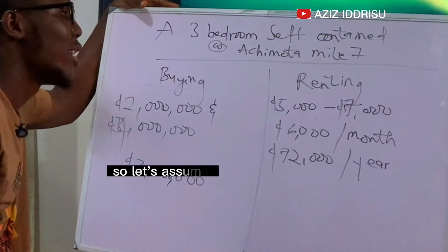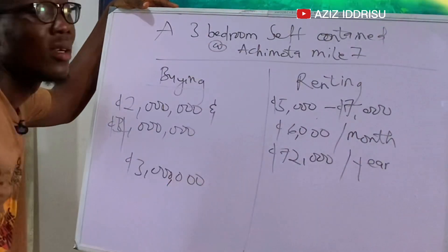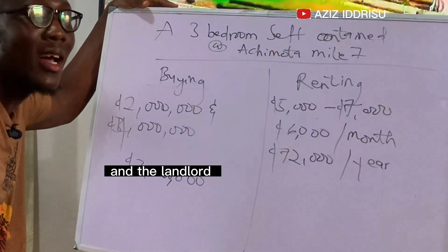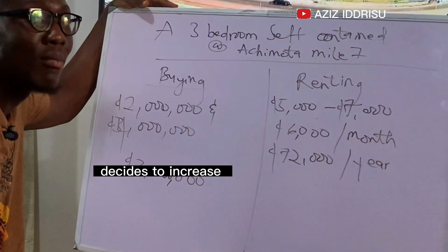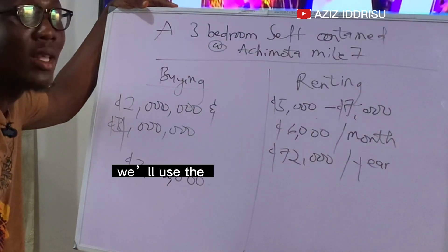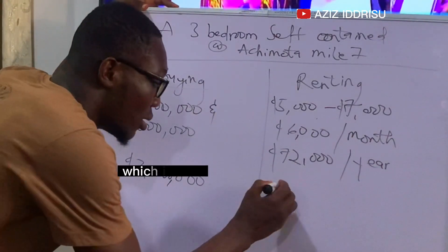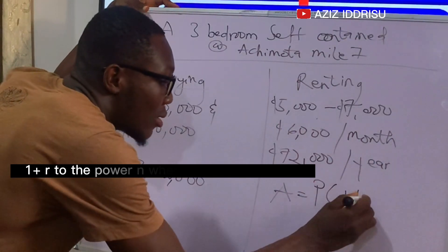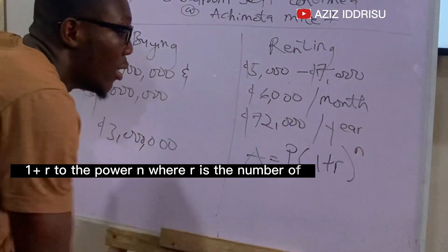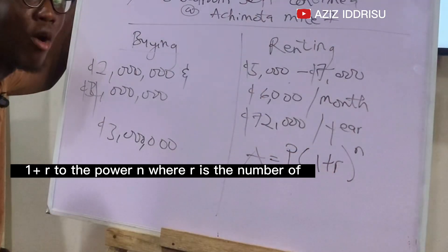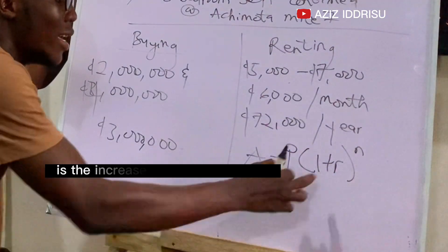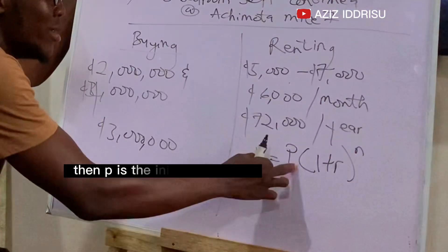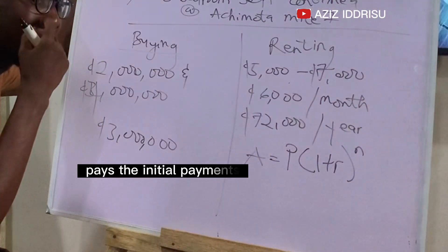Let's assume you'll be renting the same building for fifty years and the landlord decides to increase the rent by ten percent every year. We use the formula for compound interest: A = P(1 + r)^n, where r is the increase in rent per year, n is the number of years, and P is the initial payment.